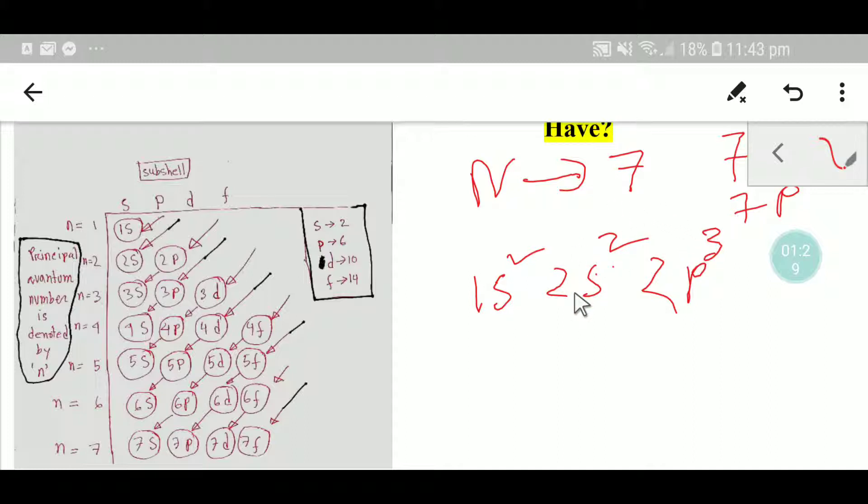In the third step we have to find out the valency shell. For the valency shell we'll look at the value of principal quantum number, the highest value of principal quantum number. Here principal quantum number is 1 and 2, so highest means we have to take 2.